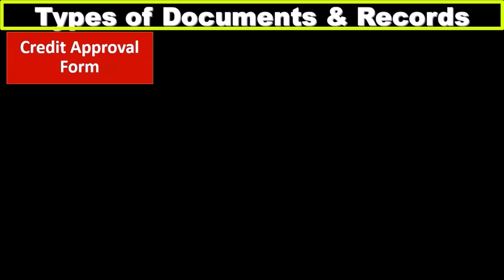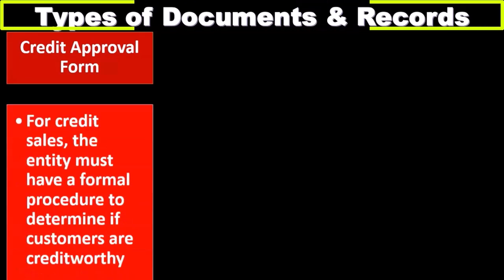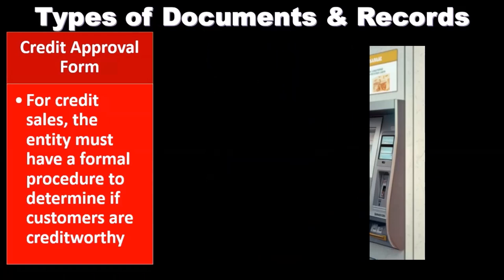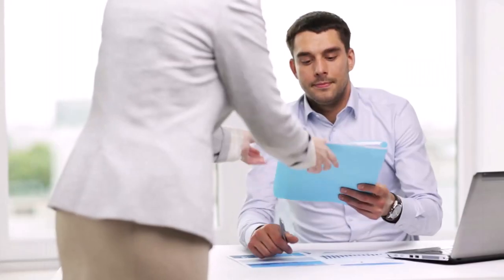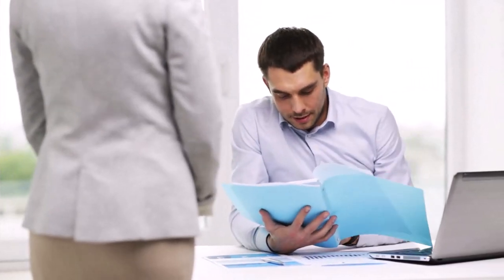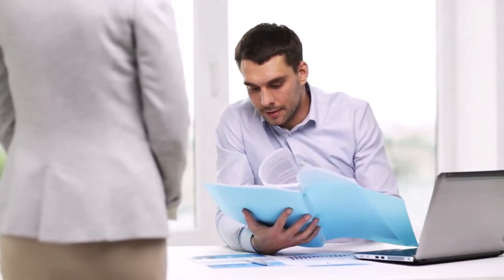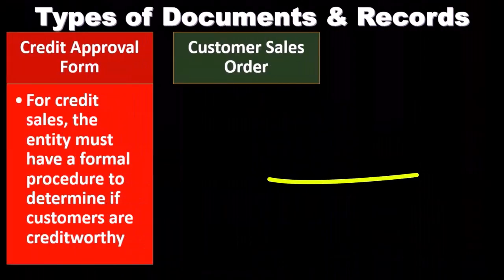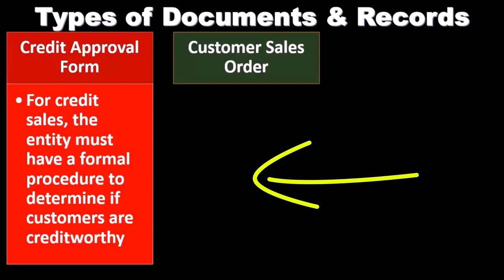The first type of document is the credit approval form — the credit approval form for credit sales. If we have a credit sale, obviously a sale on credit where we haven't gotten cash up front, the entity must have a formal process to determine if the customers are credit worthy. Depending on the industry, the sales process may have a high degree of non-payment. If there's a credit approval process, we want to make sure it's in place so there's more likelihood that payment will be received when sales are made on account.